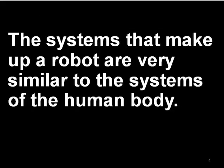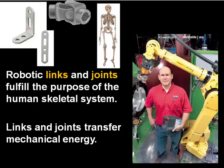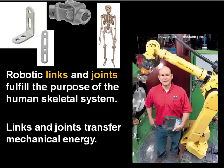You can understand why these four topics are the four fundamental robotics topics by making an analogy between these four robotics topics and the systems of the human body. In robotics, the study of kinematics is the area that roughly corresponds to the human skeletal system. Kinematics is the area of study in robotics that is concerned with the links and the joints of the robot. The links and joints in the robot are the parts that transfer mechanical energy.